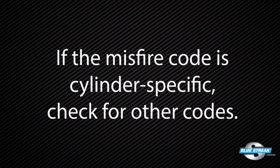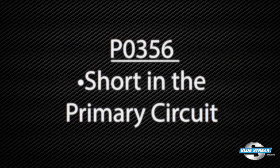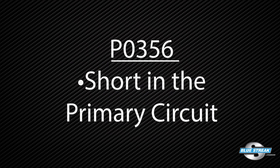How could Swaptronics damage be avoided? The proper answer is proper diagnostics. If the misfire code is cylinder specific, check for other codes. Often there will be codes for a coil circuit like P0356 for a short in the primary circuit.